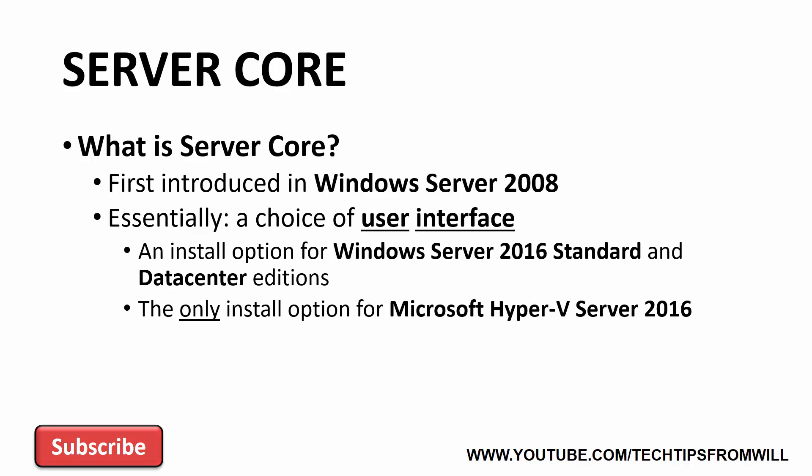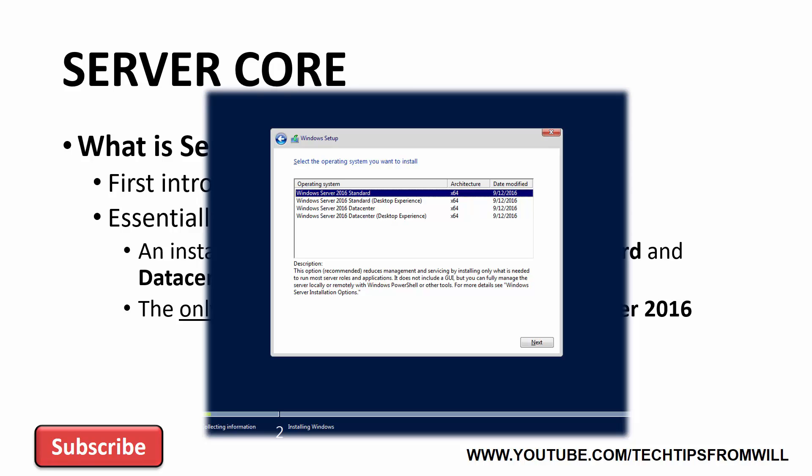When you first install Windows Server 2016 Standard or Data Center Edition, you are asked to choose your preferred interface. Seen here are the install options when booting from a Windows Server 2016 Data Center installation disk: Windows Server 2016 Standard, Windows Server 2016 Standard Desktop Experience, Windows Server 2016 Data Center, and Windows Server 2016 Data Center Desktop Experience. It's worth noting that if you boot from a Standard Edition disk, you will only receive the two Standard Edition options, not the Data Center options.